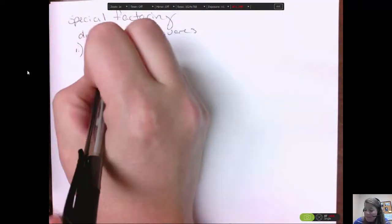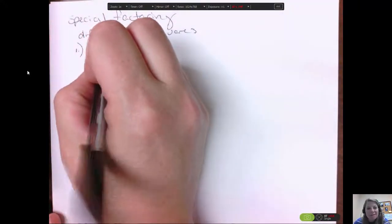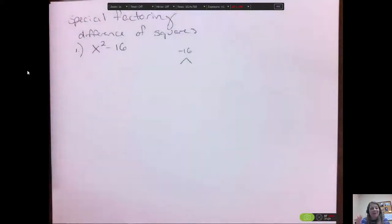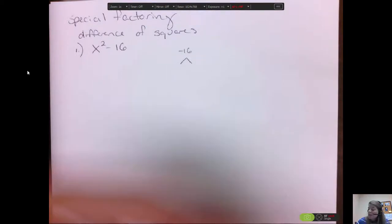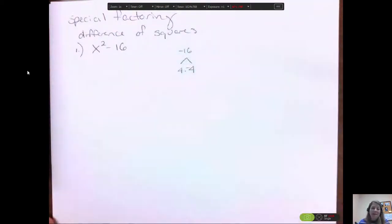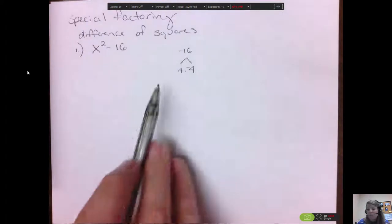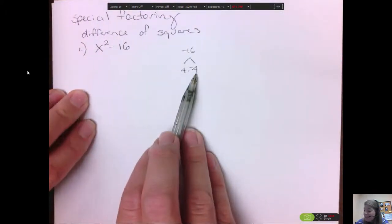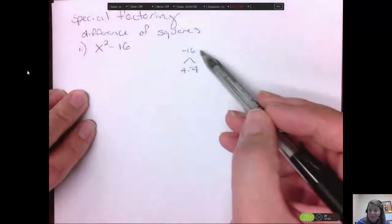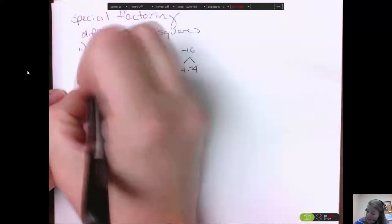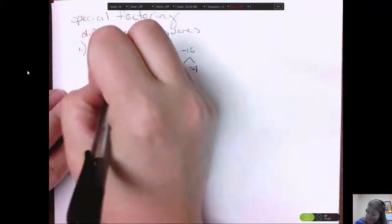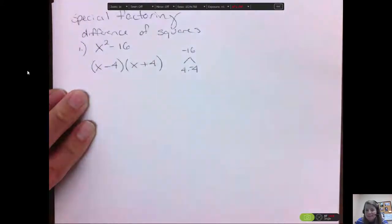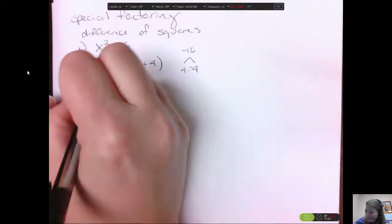The way that we want to think about this is the middle term went to zero. So what multiplies to negative 16 that would make a zero in the middle? It would have to be the same number with one of them being negative, one being positive. So it would have to be 4 times negative 4 because those add to zero and they multiply to negative 16. So we'd have x minus 4, x plus 4. This is our guess. If we multiply it out to check it, let's see what we get.